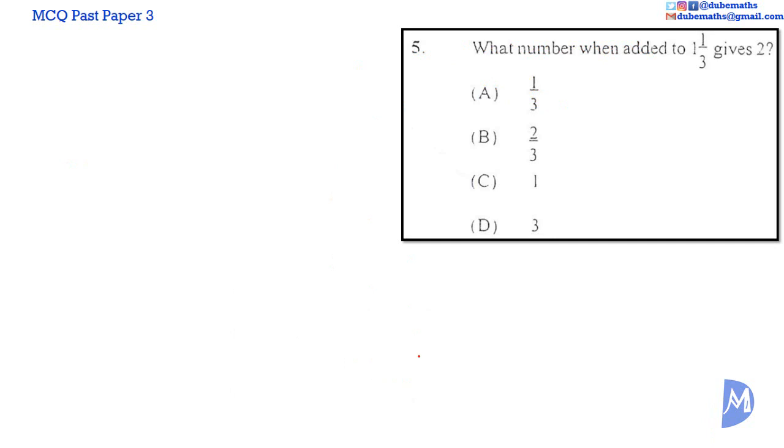Question 5: If you already did algebra with me, this would be easy. What number, which we don't know, let's call it x, when added to 1⅓ gives 2? So x + 1⅓ = 2. Subtracting 1⅓ from both sides: x + 1⅓ - 1⅓ = 2 - 1⅓. 1⅓ minus 1⅓ equals 0, so we have x alone on one side. x equals 2 minus 1⅓.